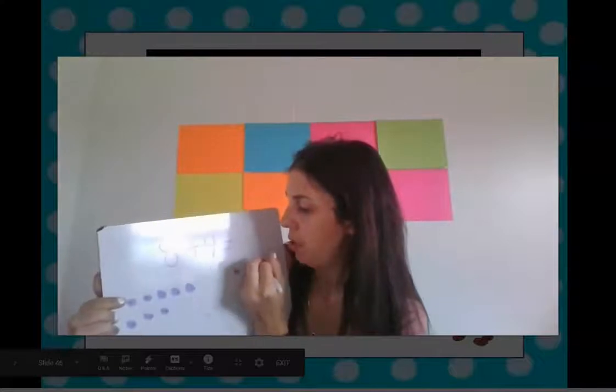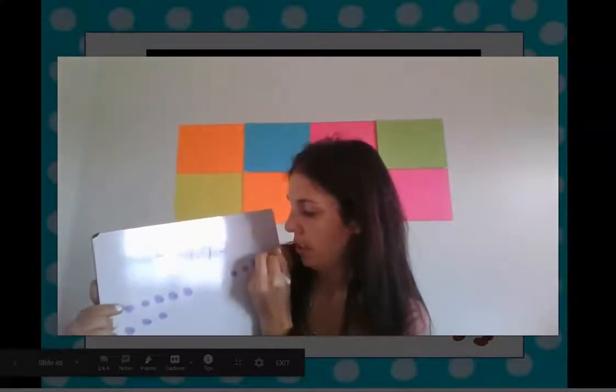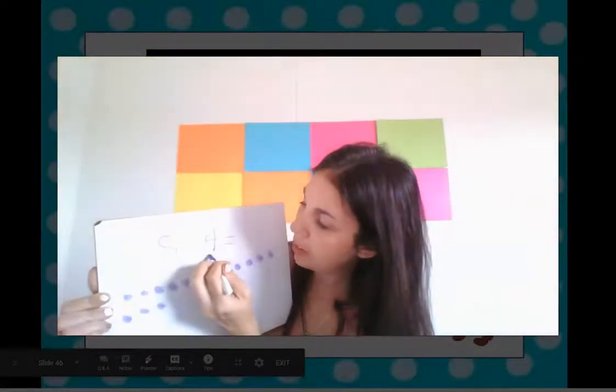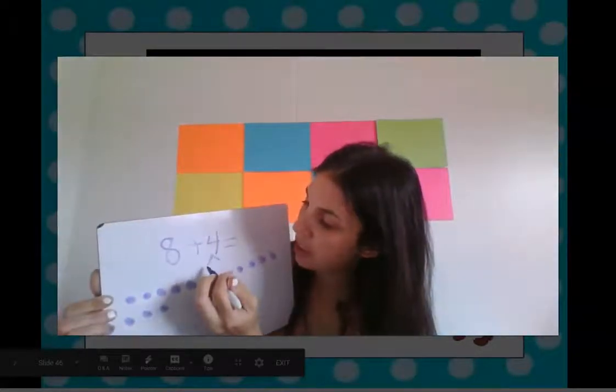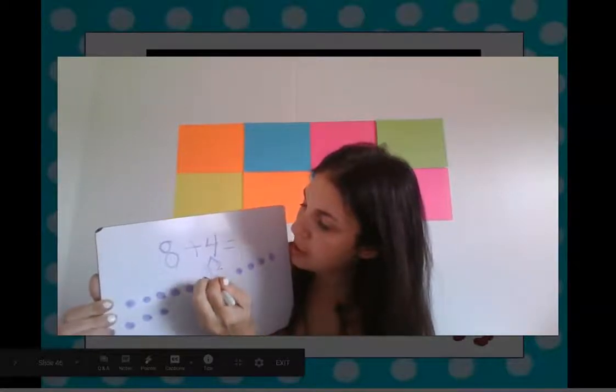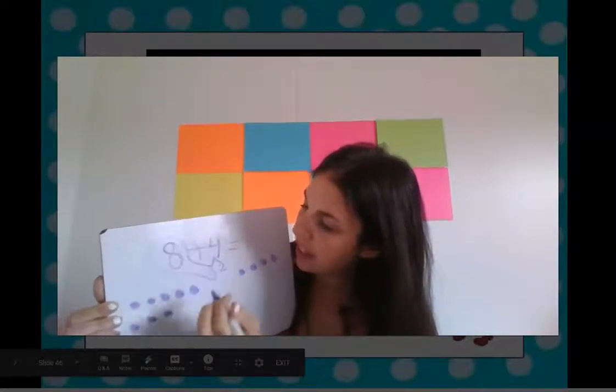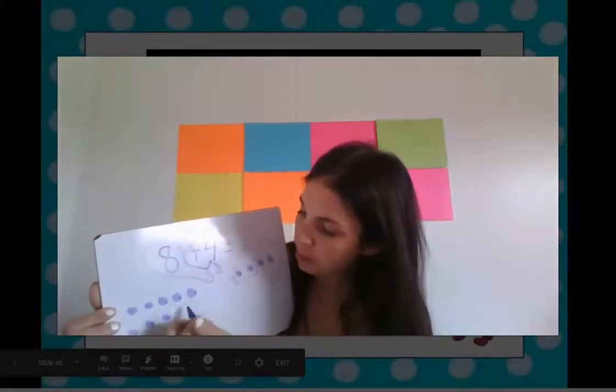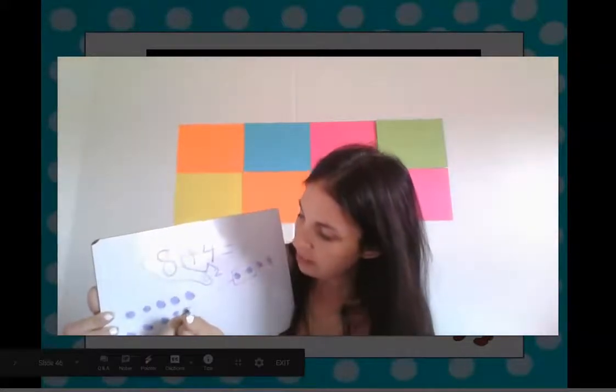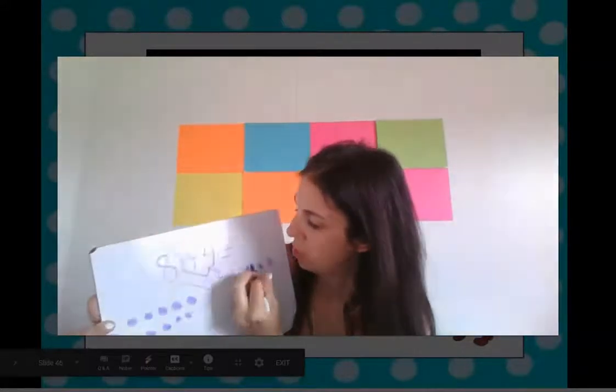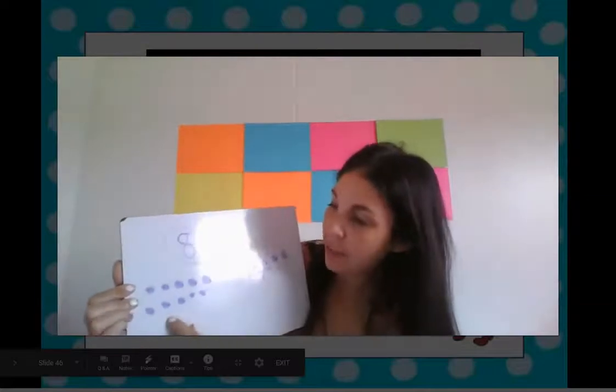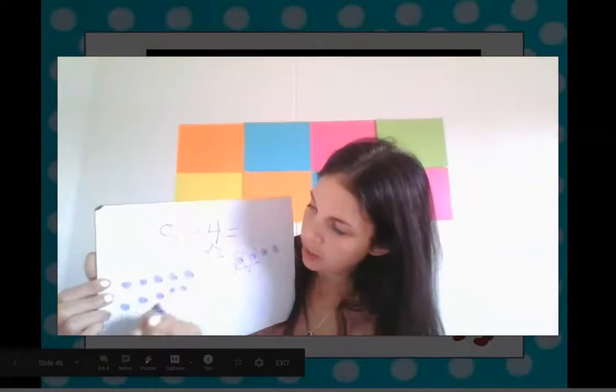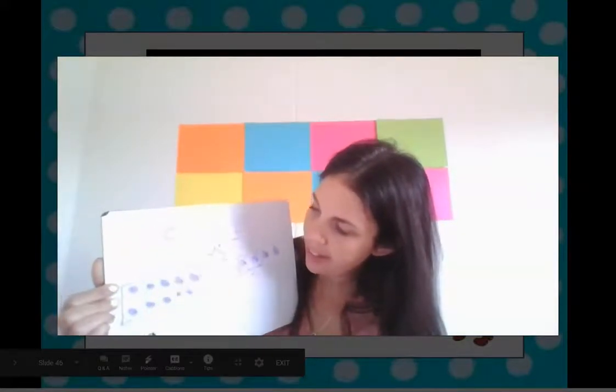And we're going to break this four up into two and two. Because two plus eight equals ten. So I'm going to bring these two right here over here. And now they're not here anymore. And now I have ten. Sorry about that glare. I'll draw a ten frame around our group of ten.